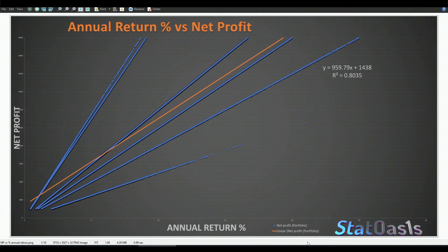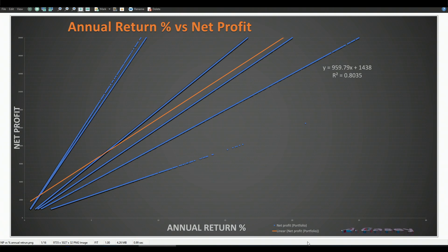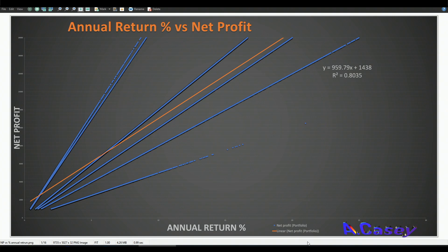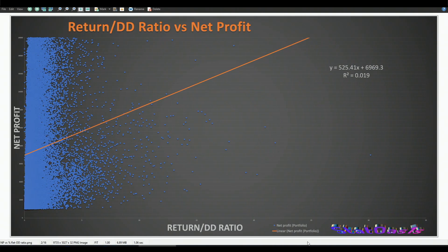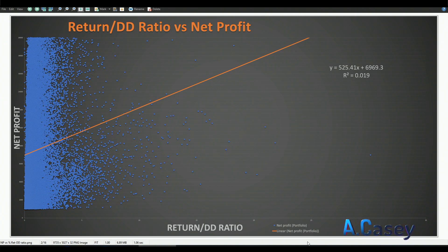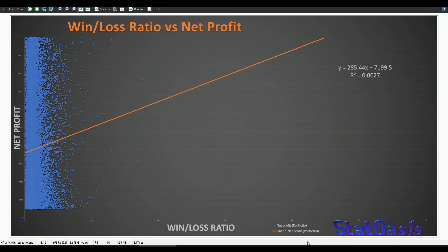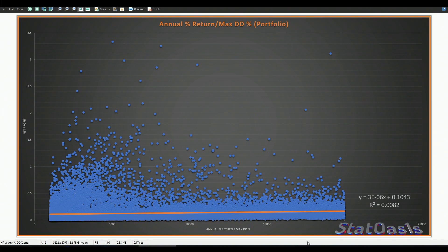Here is a scatter plot. The blue graph is net profit versus annual return percent; the orange line is the linear regression and the R-squared measures the slope correlation — higher slope means more correlated. Annual return is of course highly correlated with net profit since it's the same metric annualized. Return-to-drawdown ratio versus net profit has an R-squared of 0.019. Win/loss ratio has R-squared of 0.0027.